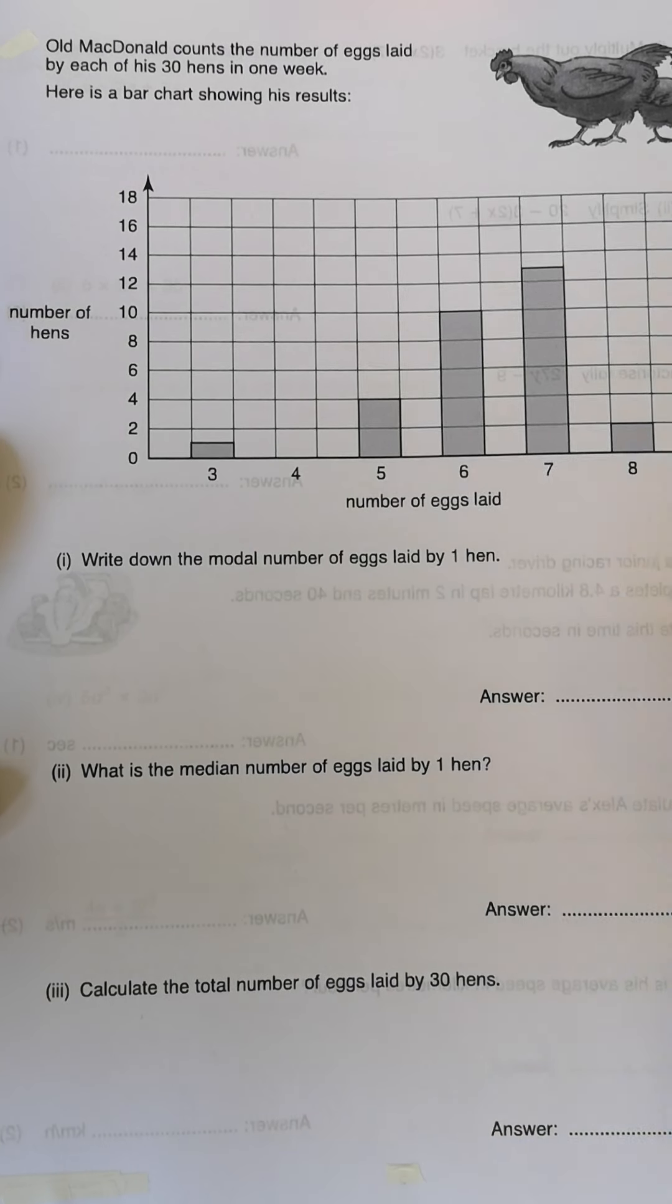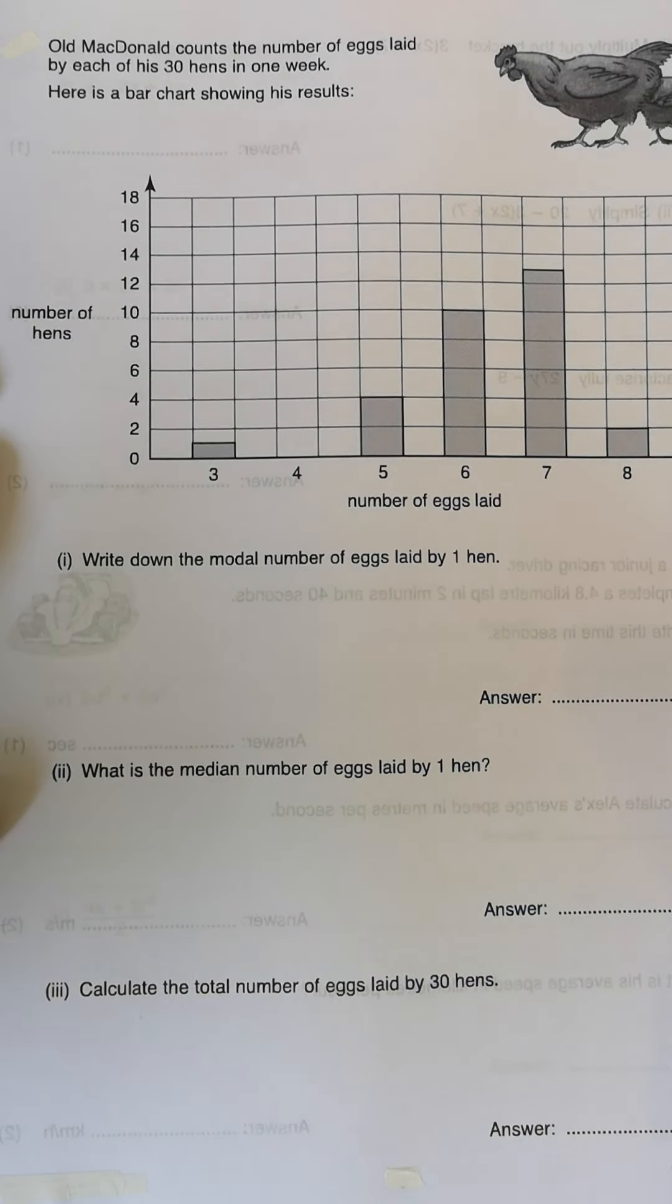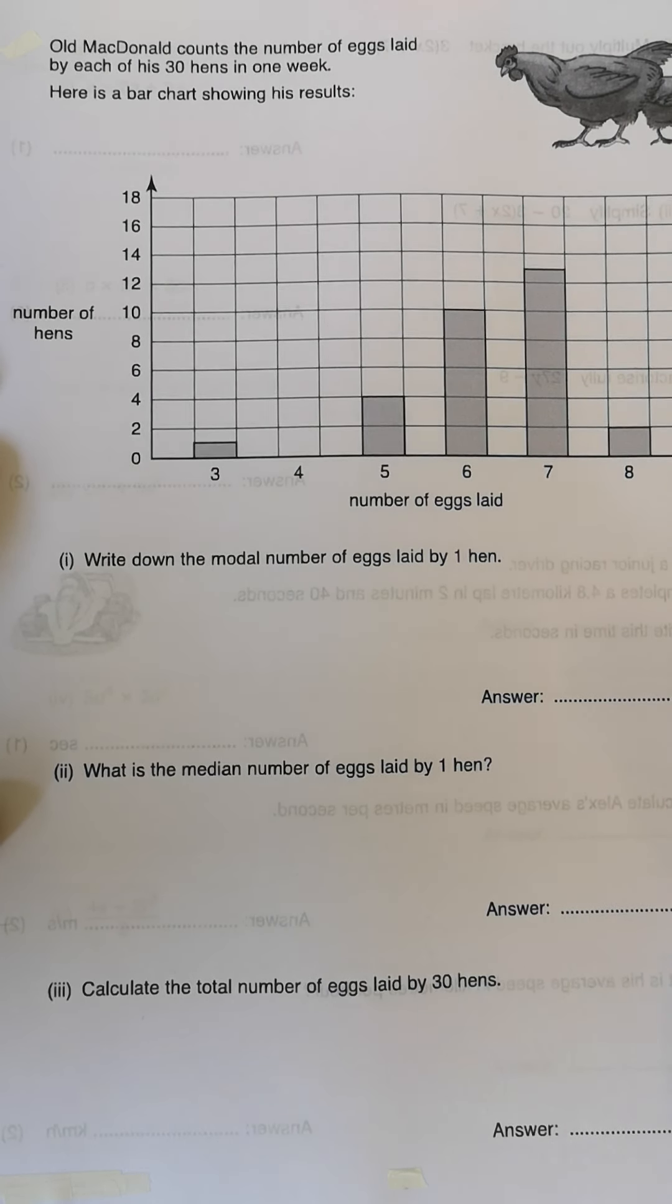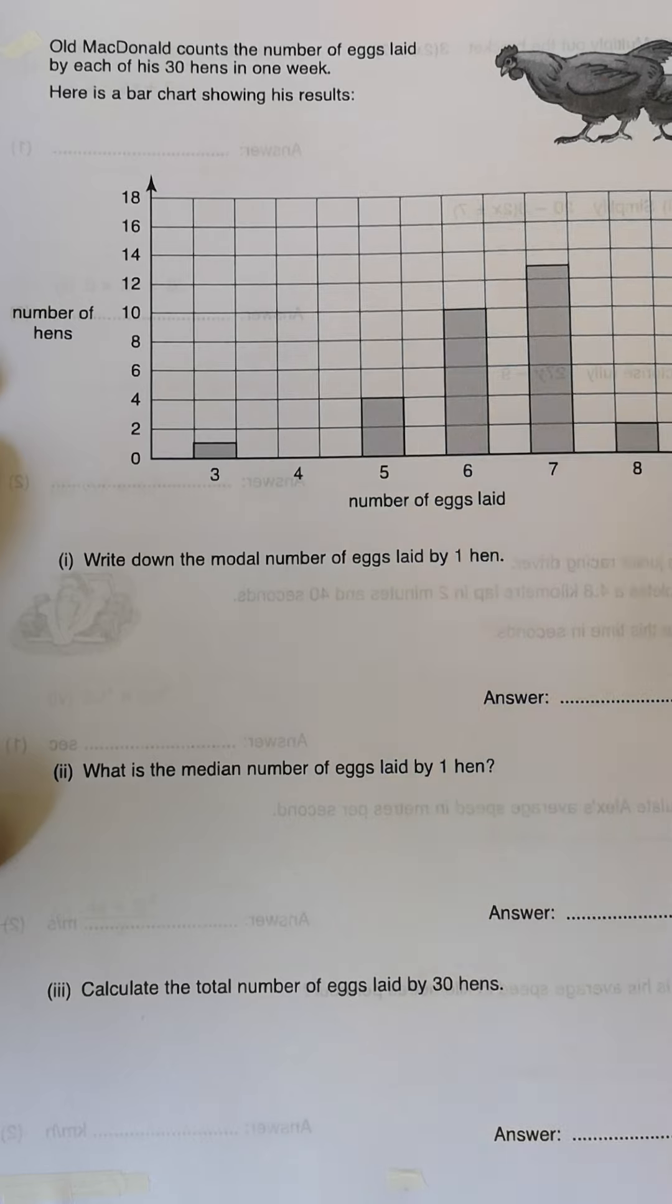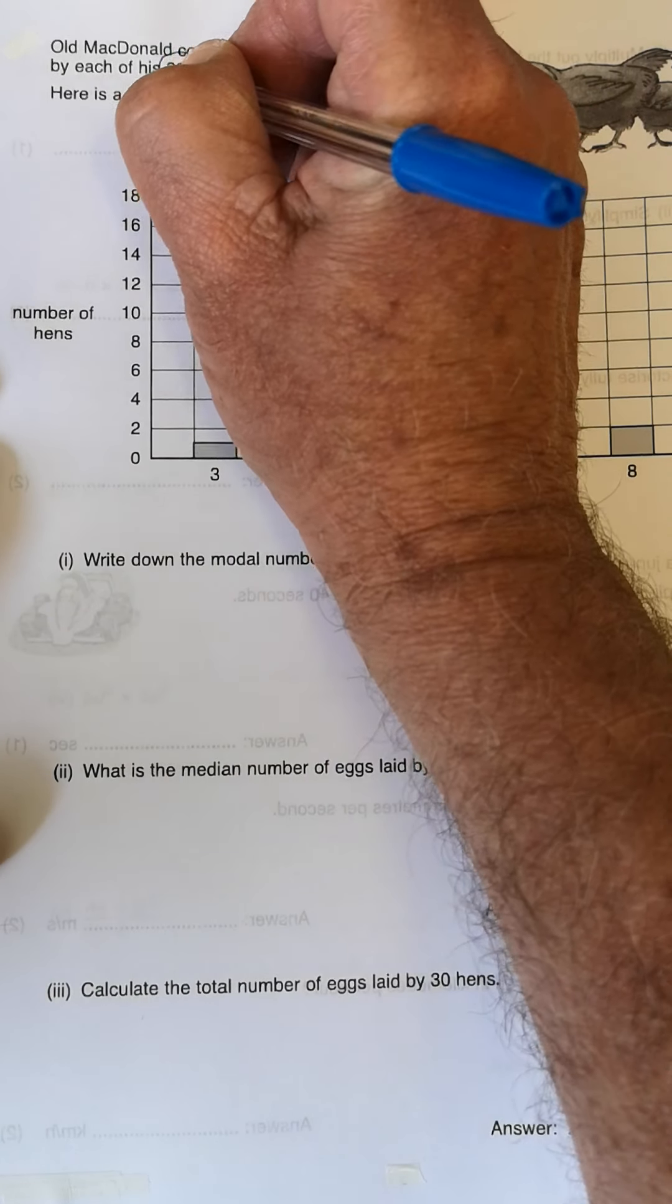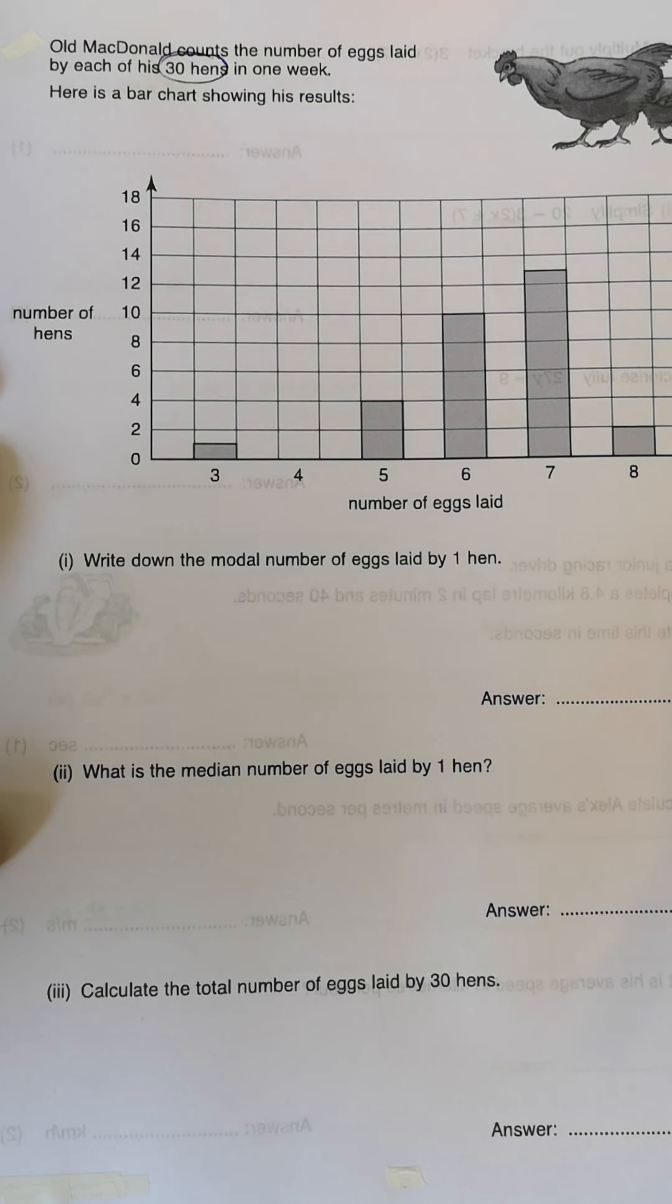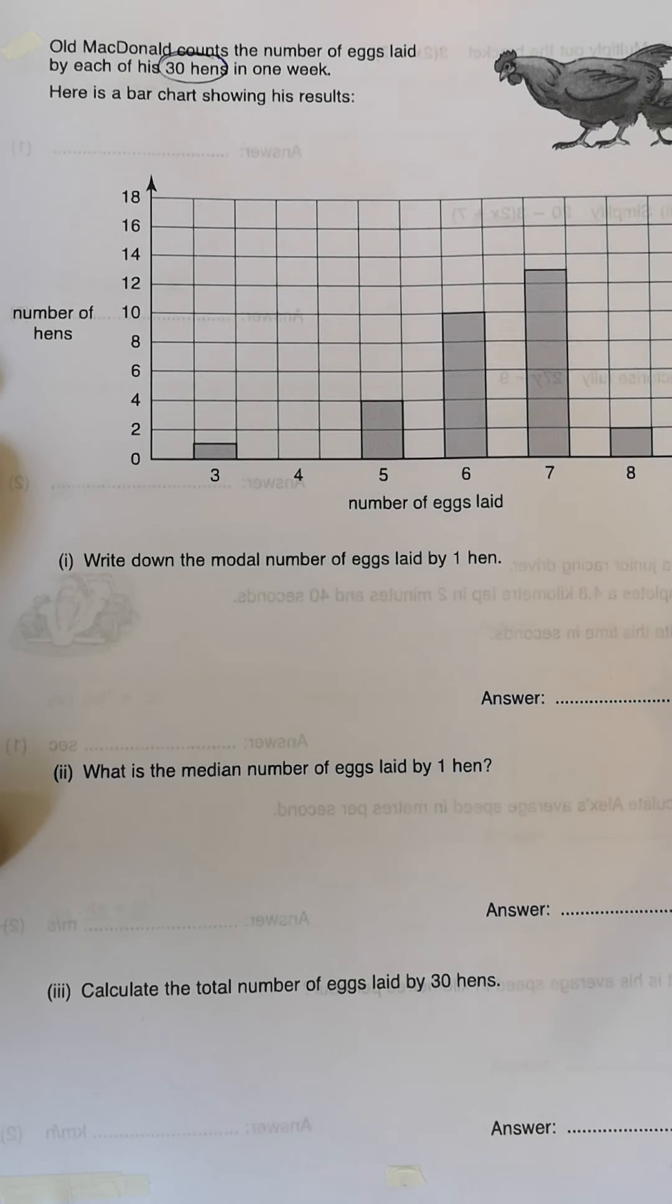Right, let's look at a pie chart now. Here we have Old MacDonald counts the number of eggs laid by each of his 30 hens in one week. So let's just circle that. It's an important fact. There are 30 hens.